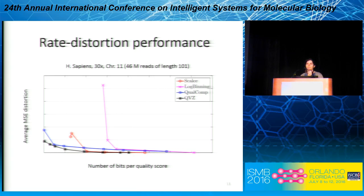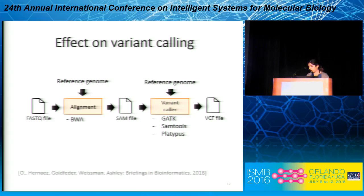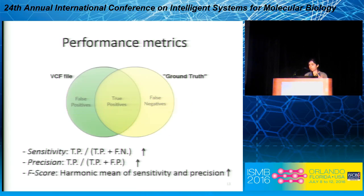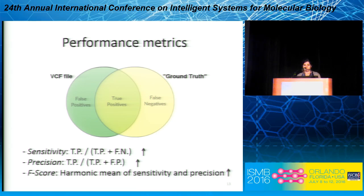Even though rate-distortion has traditionally been used to analyze lossy compressors, here we are talking about genomic data. People are more interested in understanding the effect that lossy compression is going to have on further analysis. So we performed an extensive analysis on variant calling, using BWA for alignment and then GATK, Samtools, and Platypus for variant calling. We used a human individual that has been extensively studied and for which we have a consensus of SNPs assumed to be correct. This allows us to compute the sensitivity, precision, and F-score of our results, and we want these numbers to be as close as possible to the ground truth.